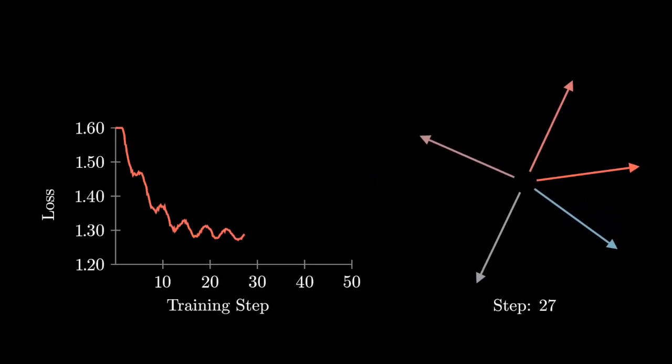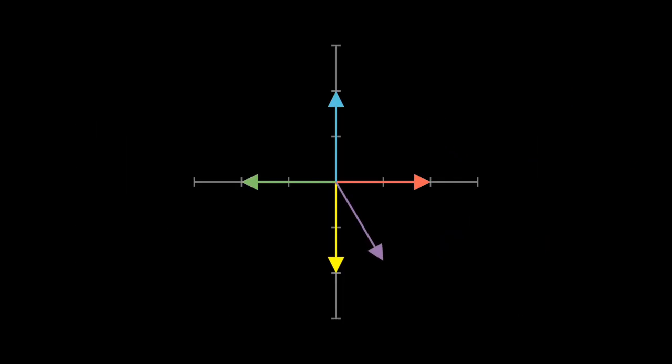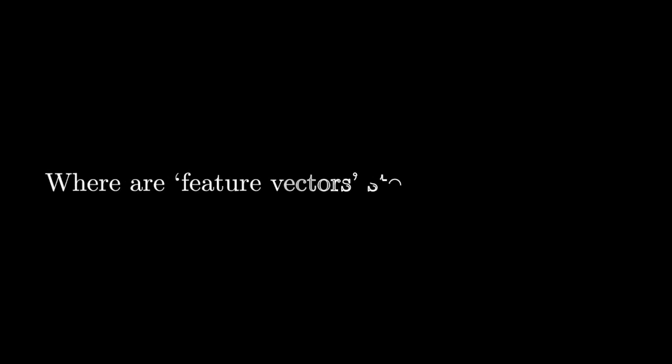During training, gradient descent optimizes the loss in a way that often spreads feature directions apart to reduce interference. So if we squeeze three or more features in the 2D space, at least two of them will partially overlap, meaning that activating one feature may unintentionally trigger part of another signal. Before we talk about how the model manages feature overlap and interference, let's see where and how these feature vectors live inside a network.